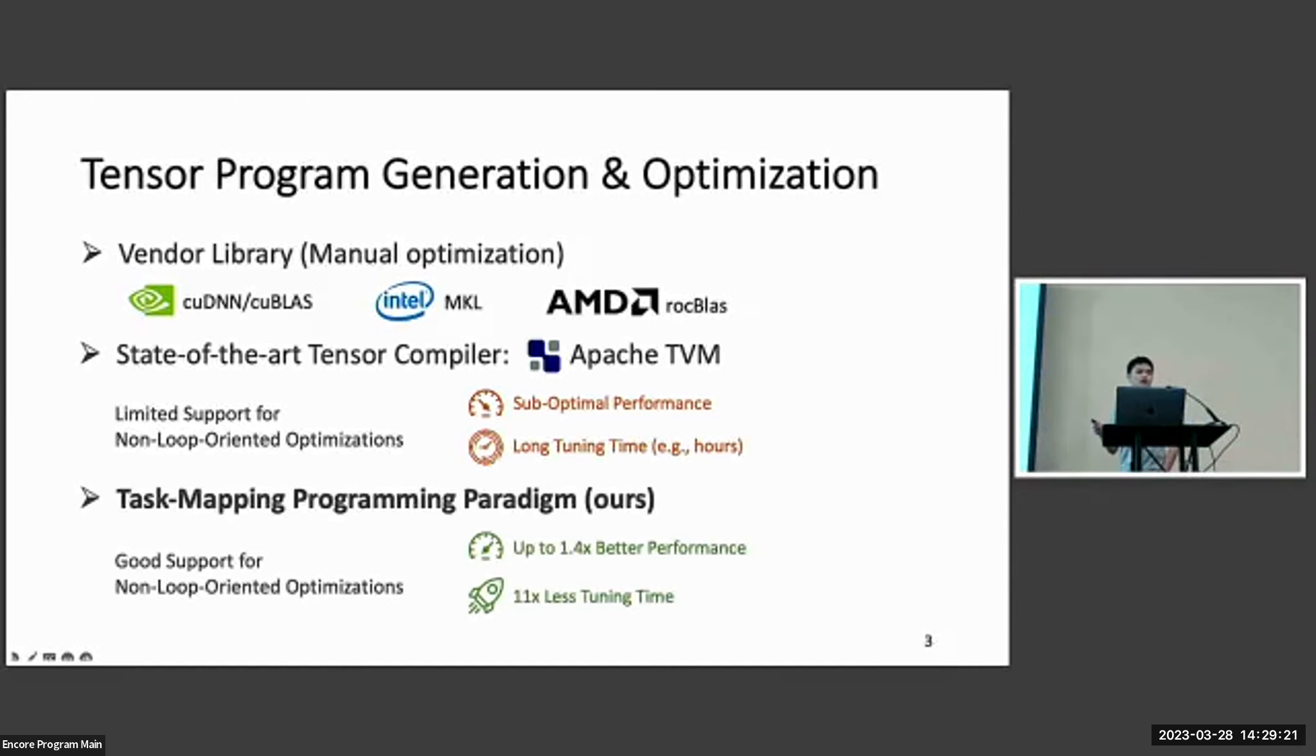In this work, we proposed a new way to construct tensor programs. We call it task mapping programming paradigm. It has good support for non-loop-oriented optimizations, and we can have up to 1.4 times speedup and 11 times less tuning time.